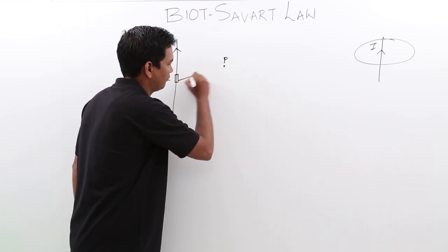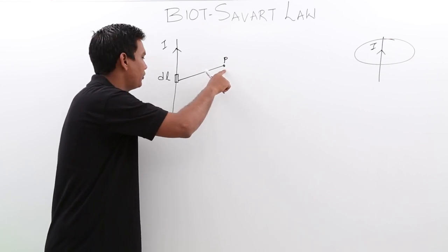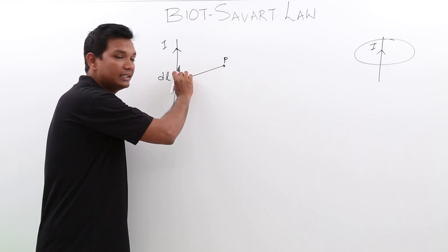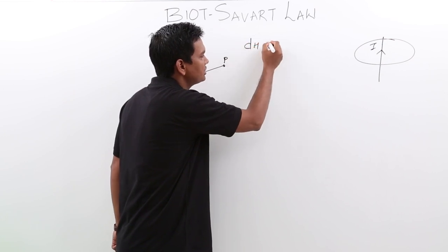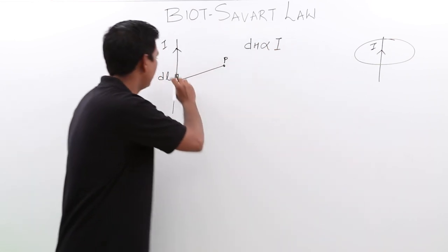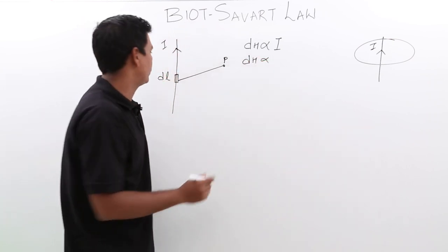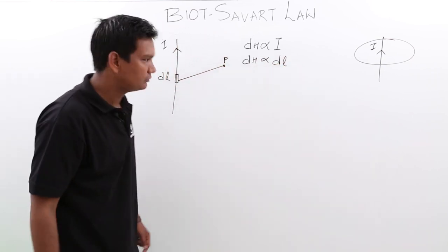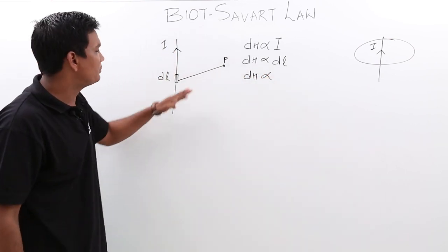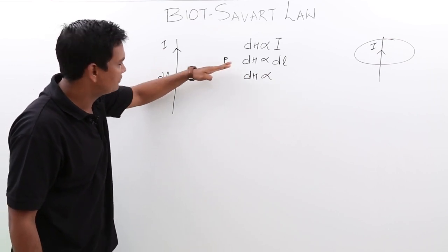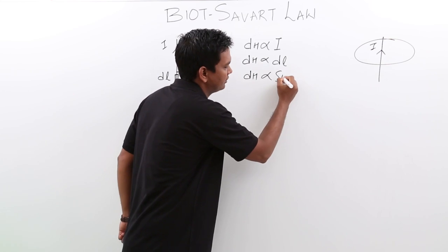Connecting these two, what he said is the magnetic field intensity dH at point P due to this small length DL carrying current I is directly proportional to the current I, directly proportional to the small length DL, and directly proportional to the sine of the angle theta — the angle made by the line connecting the point and the wire — which is sine theta.